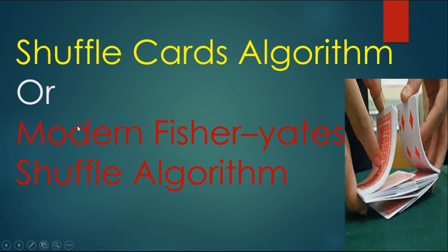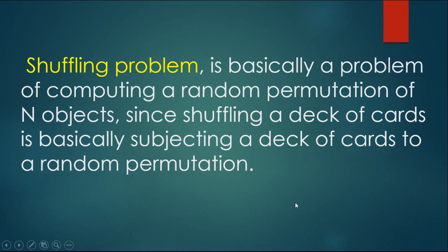Shuffle Cards Algorithm, or Modern Fisher-Yates Shuffle Algorithm. Shuffling problem is basically a problem of computing the random permutation of N objects, since shuffling a deck of cards is basically subjecting the deck of cards to a random permutation.